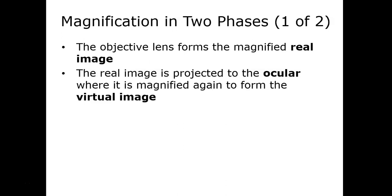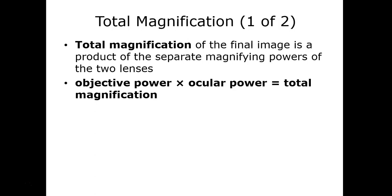There are two phases of magnification: light through the objective lens creates the real image, which then travels up through the ocular lens and gets magnified again — this is the virtual image. For total magnification, multiply the objective lens power by the ocular power of 10. A 4× objective gives 40× total; a 40× objective gives 400× total magnification.